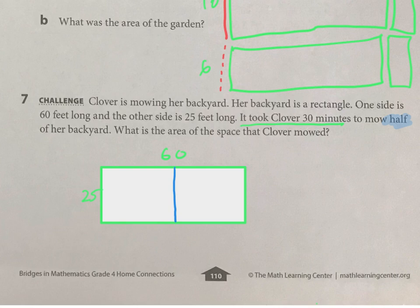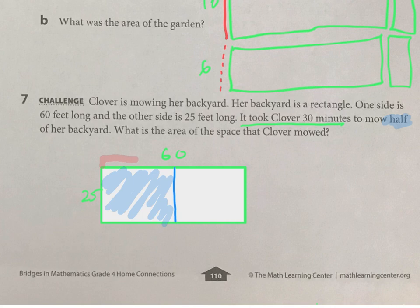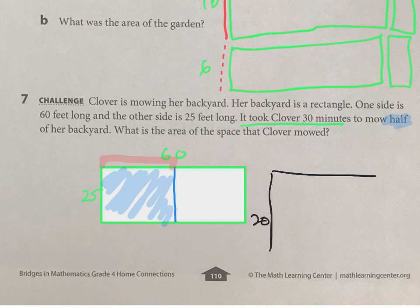How much did she mow? You're going to need to take half of 60 — that right there is going to be half of 60. Then you're going to multiply that by 35 to figure it out. You can draw a model with 20 and 5 and whatever you have. Figure that out.